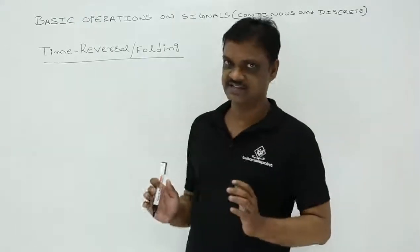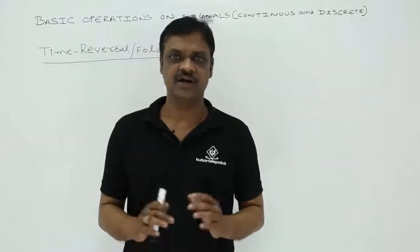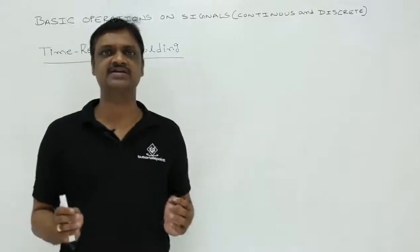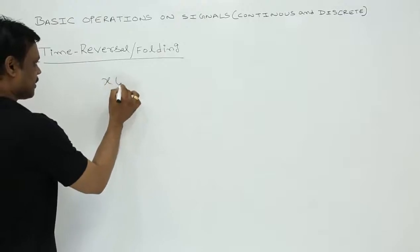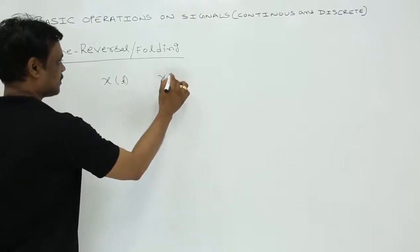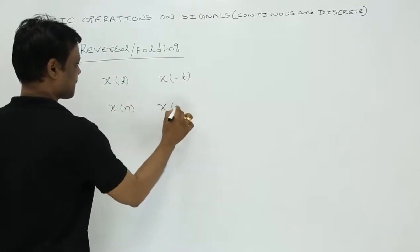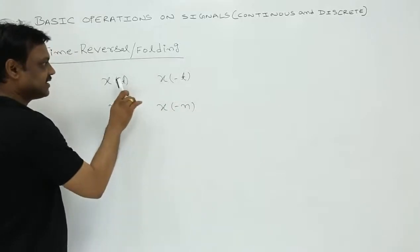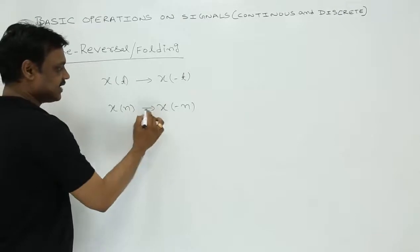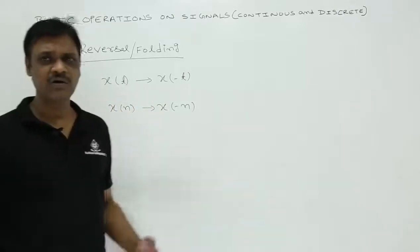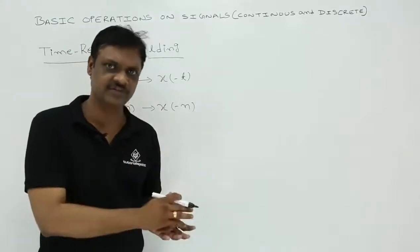Suppose x of t is a signal, then x of minus t is its time reversal signal. Suppose x of n is a signal, then x of minus n is the time reversal of x of n. How do you draw the time reversal of x of t or x of n?